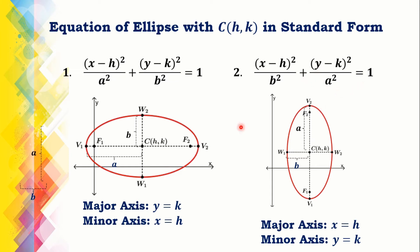We will be using the values of A squared and B squared to determine which equation will be used and how the ellipse will be illustrated. Let us take some examples.